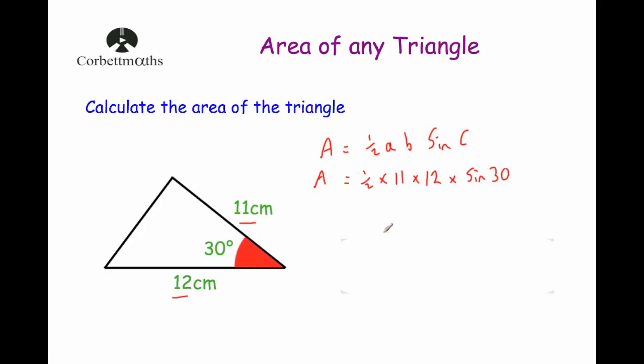Now this question could be a non-calculator question. The sine of 30 is 0.5, so if I was doing this question without a calculator I would probably do 11 times 12, then half it and then half it again, and that would give me the area for the triangle. But I'm going to show you how to do it on the calculator, so what I would do is type that into the calculator.